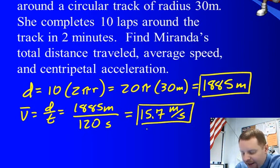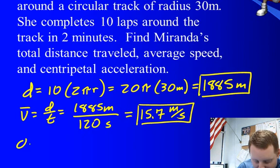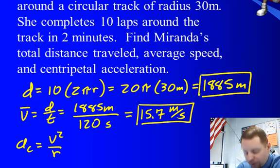And finally, let's find her centripetal acceleration. If you recall from our centripetal acceleration studies, centripetal acceleration is the square of velocity divided by the radius, ac equals v² over r.